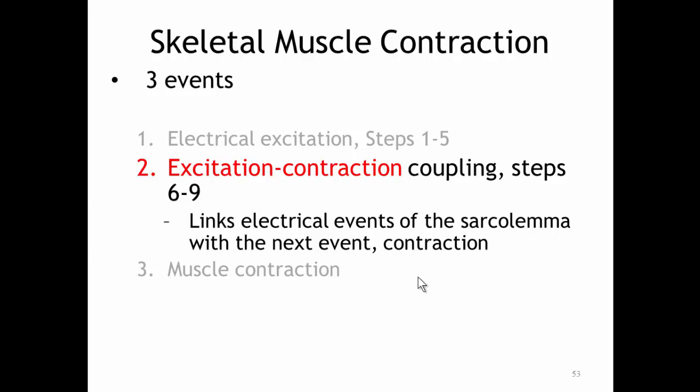Now we're going to look at the second event in skeletal muscle contraction, which is excitation-contraction coupling. This is where we're going to link the electrical events at the sarcolemma that we just saw with the next event, which is contraction. So there are four steps here — these are steps six through nine.